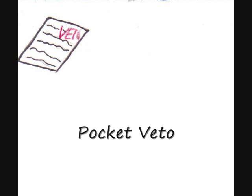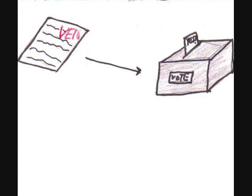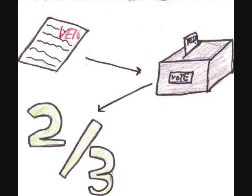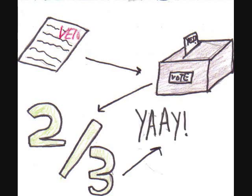Passage in both houses means that the bill goes on to the President. The President can sign the bill into passage, or he can veto or not sign the bill. A pocket veto, or veto by default if it isn't signed within 10 days of the Congressional session ending, can also happen. Any veto means the bill goes back to both houses for a vote. If two-thirds of both houses pass the bill, then the bill becomes law.